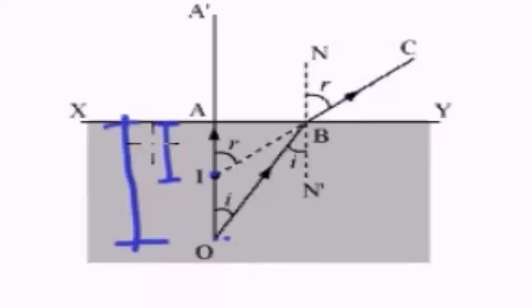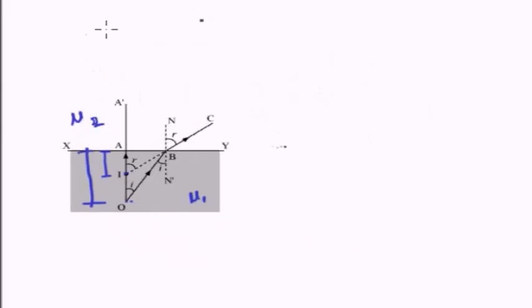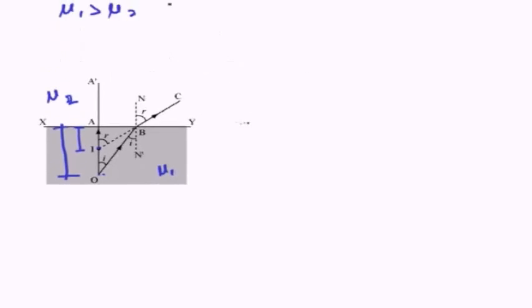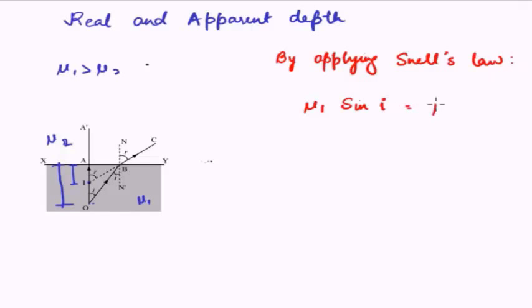Now let us see the calculations behind this. Let us call this as mu1 and this as mu2, the refractive indices of the two mediums. We know that mu1 will be greater than mu2 because medium 1 is the denser medium. Now let us apply Snell's law. Applying Snell's law, this is the angle of incidence and this is the angle of refraction. So mu1 sin i is equal to mu2 sin r — the basic Snell's law.